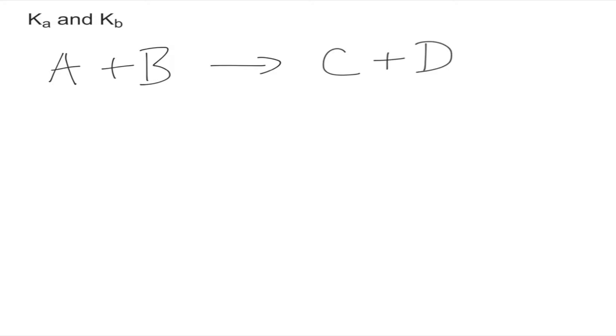Like is the case for the other K constants, the Ka and Kb can be found through the same method. Here I wrote a normal equation showing that A plus B will form C plus D. So A and B are the reactants and C and D are the products. And the way you find K is by obtaining the concentration of the products and dividing that by the concentration of the reactants.